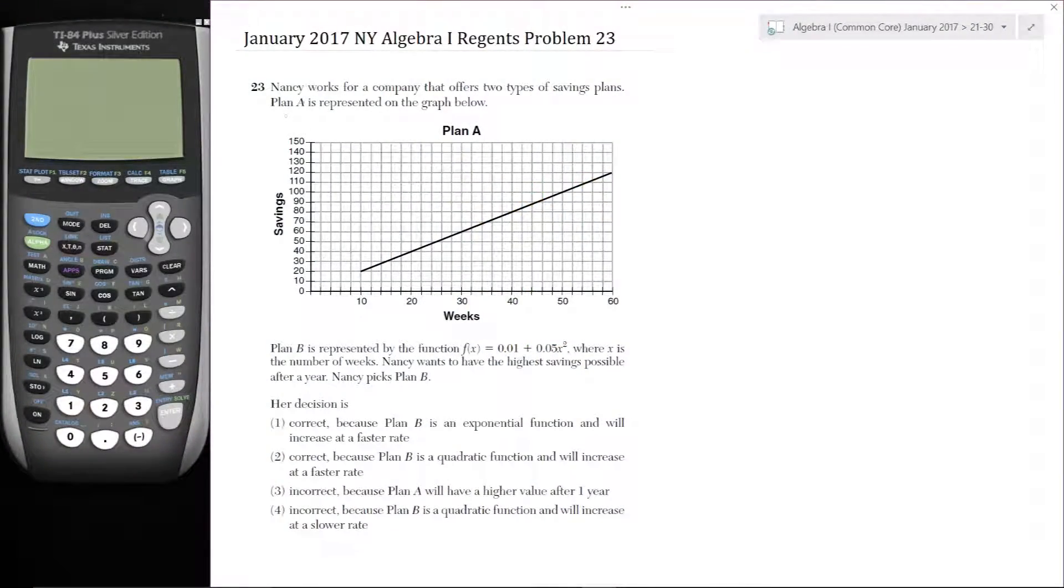Here's problem 23. Nancy works for a company that offers two types of saving plans. Plan A is represented on the graph below, savings from 0 to 150, and weeks from 0 to 60. Plan B is represented by the function f(x) = 0.01 + 0.05x^2, where x is the number of weeks.